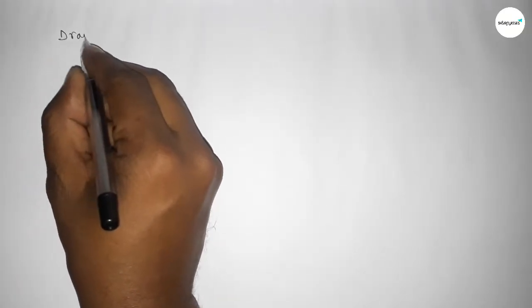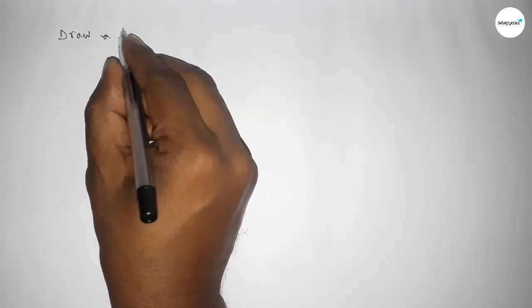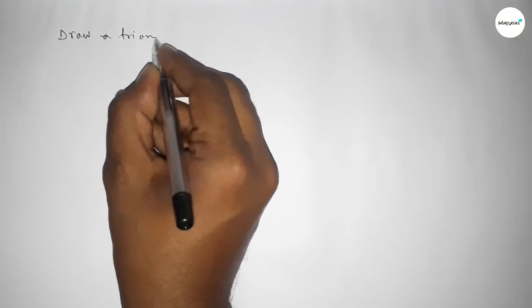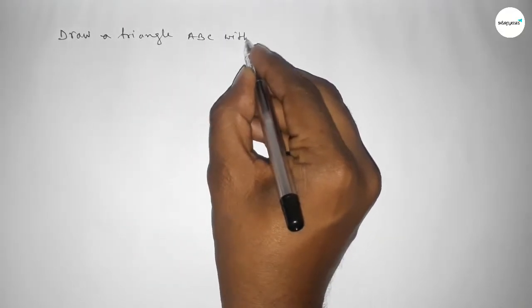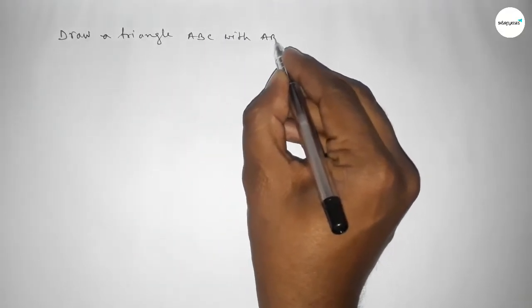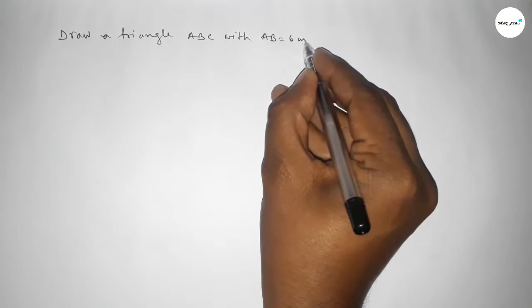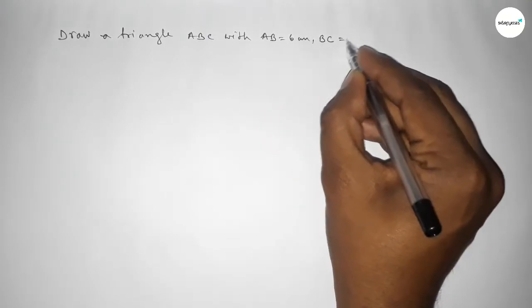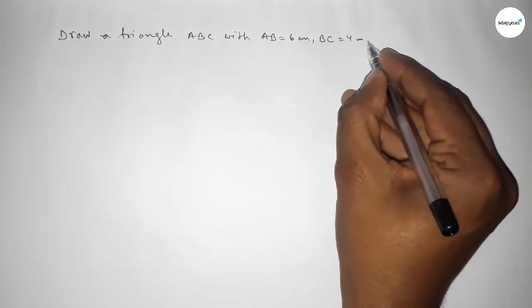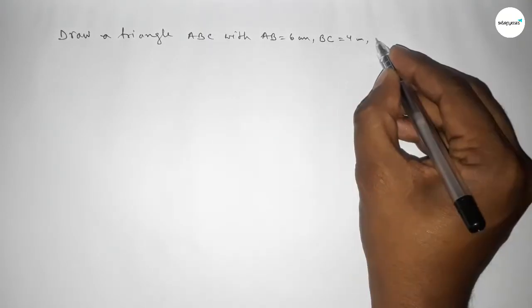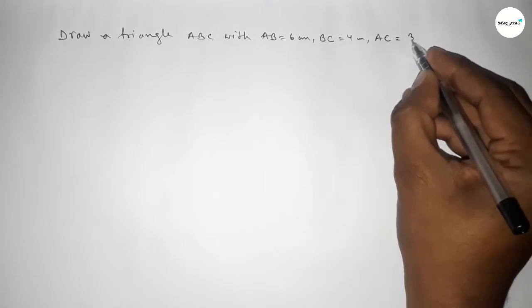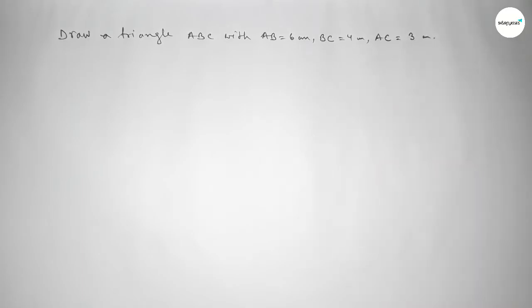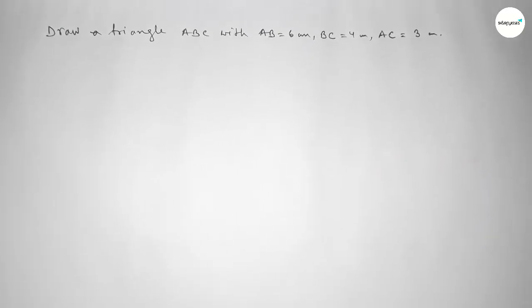Hi everyone, welcome to Si Share Classes. Today in this video we have to draw a triangle ABC with AB equal to 6 centimeter, BC equal to 4 centimeter, and AC equal to 3 centimeter. So let's start the video.